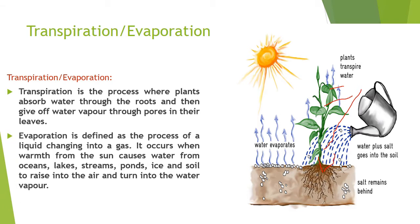Evaporation is defined as the process of a liquid changing into a gas. It occurs when warmth from the sun causes water from oceans, lakes, streams, ponds, ice, and soil to rise into the air and turn into water vapor. Evaporation is the transfer of water from the surface of the earth to the atmosphere. The main factors affecting evaporation are temperature, humidity, wind speed, and solar radiation. The principal source of water vapor is oceans, but evaporation also occurs in soil, snow, and ice.